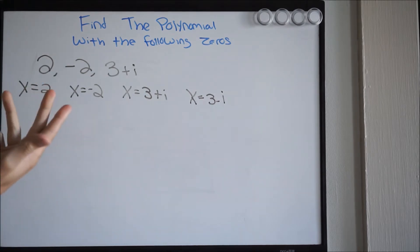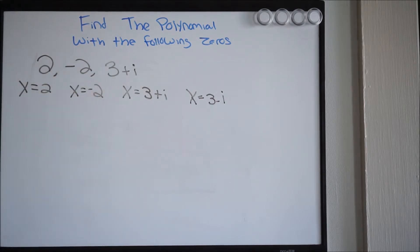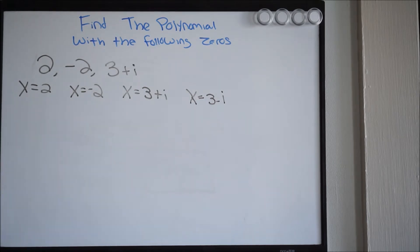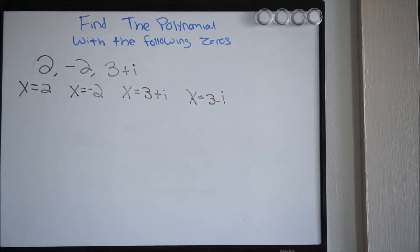So we essentially have four values for x: x equals 2, x equals negative 2, x equals 3 plus i, and x equals 3 minus i. You need to ask yourself where did these come from. Remember, when you solve polynomials, you set it equal to 0, and the goal is to factor, then you take each one of those factors, set it equal to 0, and solve for x.